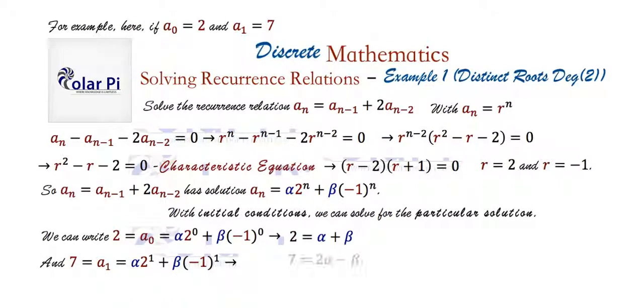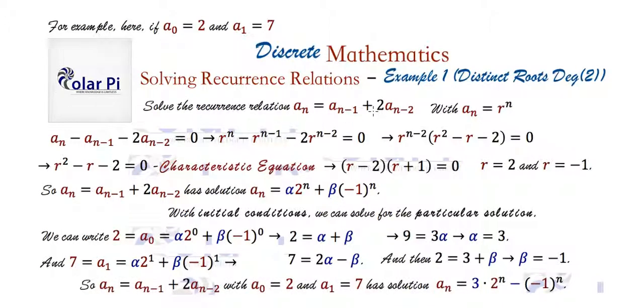And so then we get a second equation on alpha and beta. And so we can solve for two unknowns using two equations always. And here, all we have to do is just add the two equations and the betas will cancel. And so we get this, which is alpha is 3. And from knowing alpha is 3, it's easy enough to see that beta has to be negative 1. So the particular solution to this recurrence relation with the initial condition that a zero is 2 and a one is 7 is this fella here.